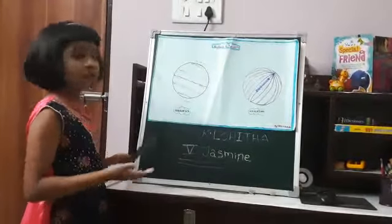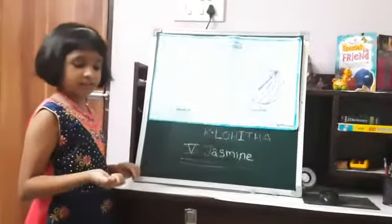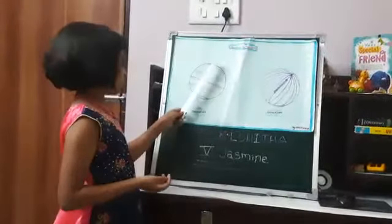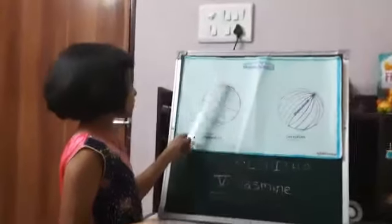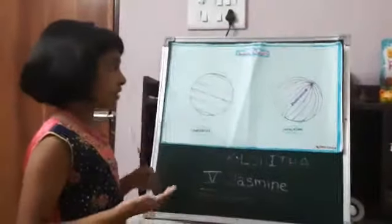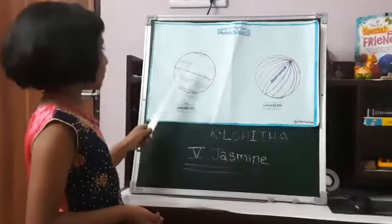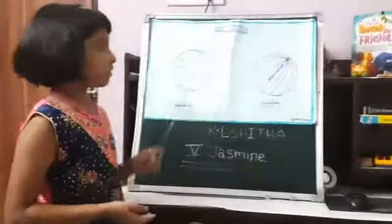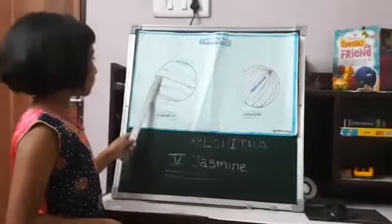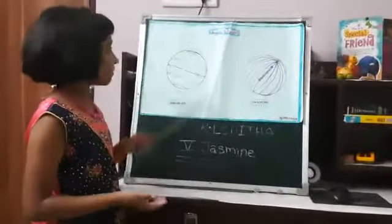Now we are starting the important features of parallels. All parallels are complete circles except for the north and south poles, which are points. All parallels are located at an equal distance from each other. The length of the parallels decreases as we move away from the equator towards the poles.